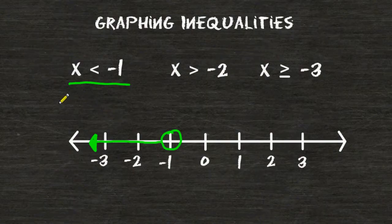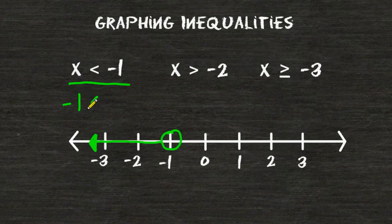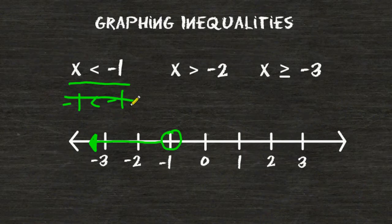if we plug negative 1 into x here, negative 1 is not less than negative 1. Therefore we cannot include it as a possible solution.